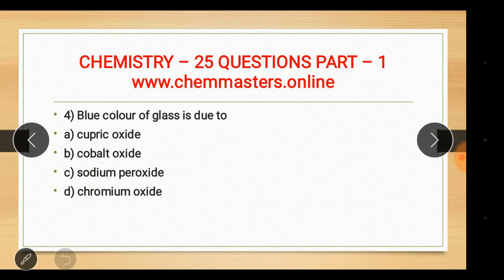Question four: the blue color of glass is due to cobalt oxide — answer B. When cupric oxide is used in glass, it produces green, yellow, or brown colors depending on the compound. Chromium oxide in glass produces an emerald green color.